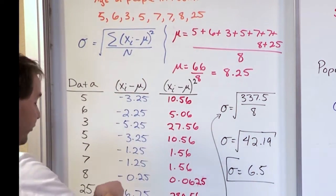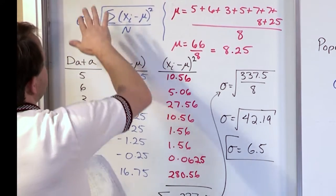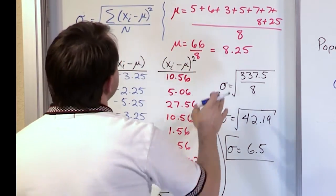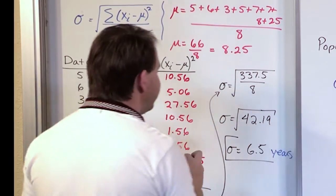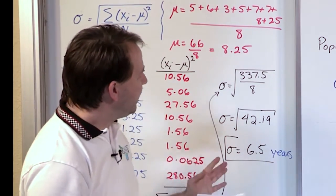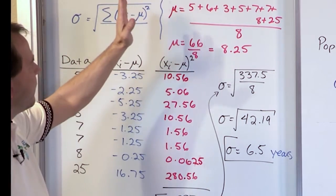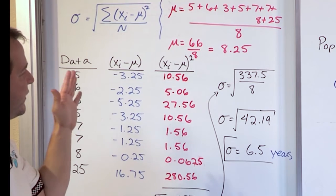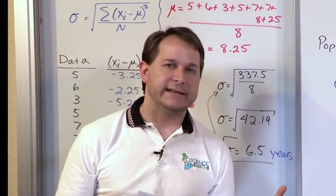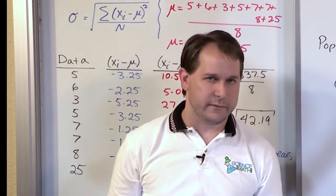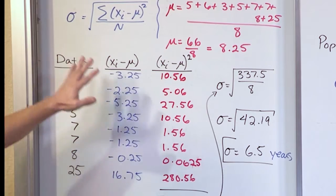What are the units of the standard deviation? The units match the units of whatever you're measuring. In this case, we're talking about ages of people in the room, so the units are years. The standard deviation is 6.5 years. The mean occurred at 8.25 — that's a measure of roughly the center of this data set. The standard deviation, or the spread about that mean, is about six and a half years around the mean. It's a relative indication of how spread apart that data is.